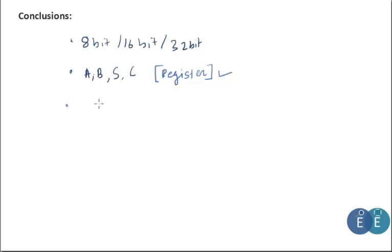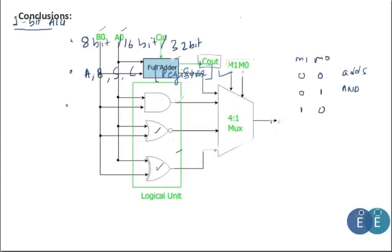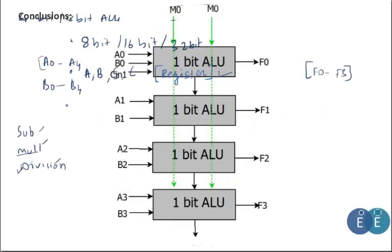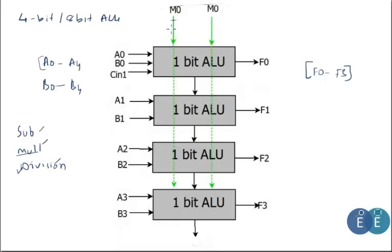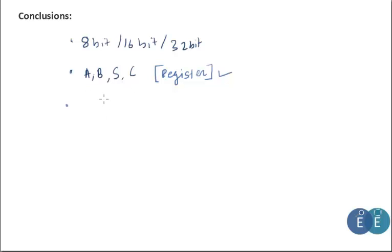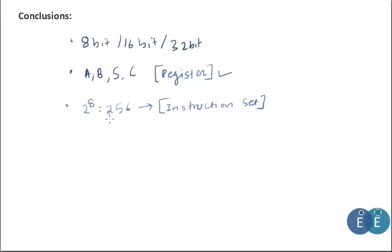The two selection lines M0 and M1 form what are called opcodes, or operation codes. When M0 and M1 are 0-0, it selects addition. With, say, eight selection lines, the ALU can support 2^8 = 256 different instructions, forming the instruction set of the controller or processor.